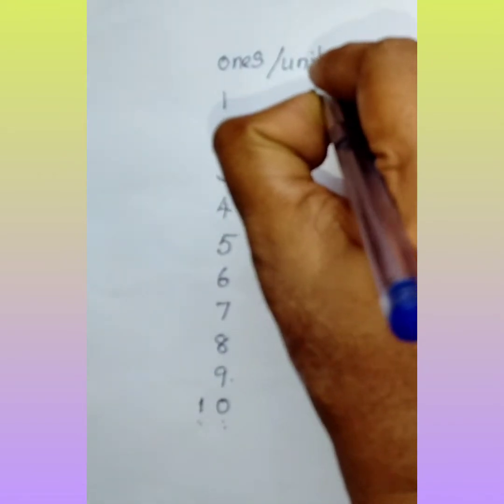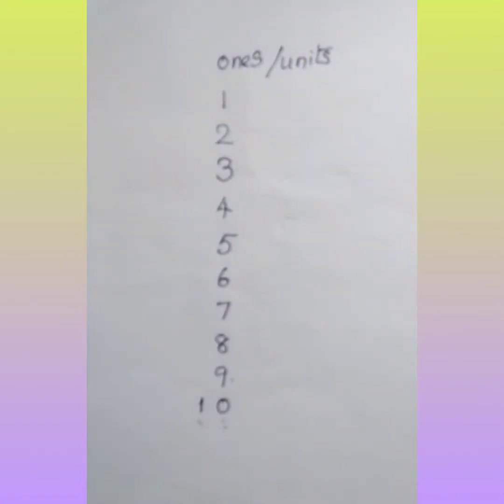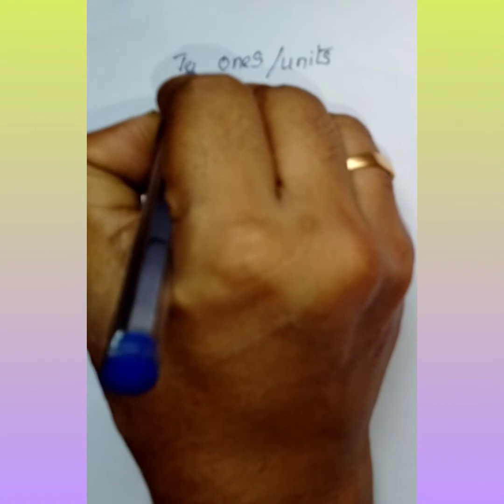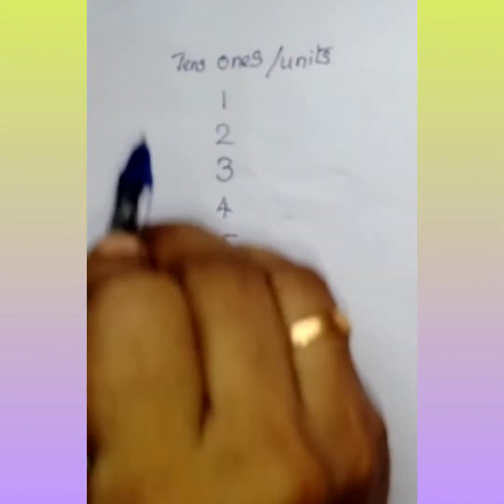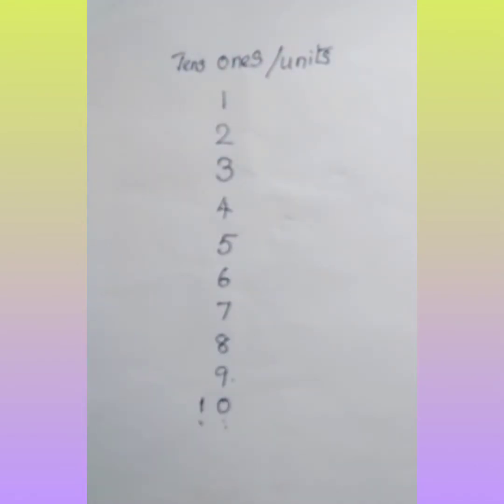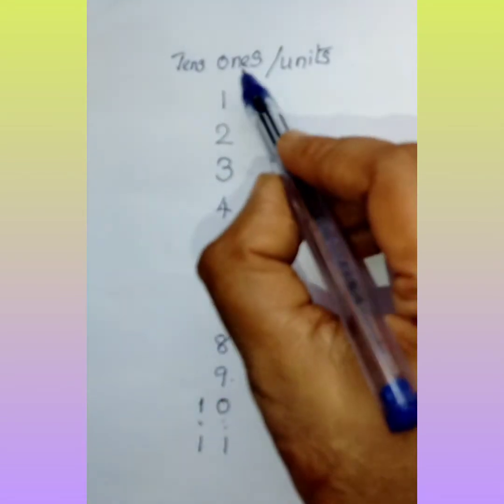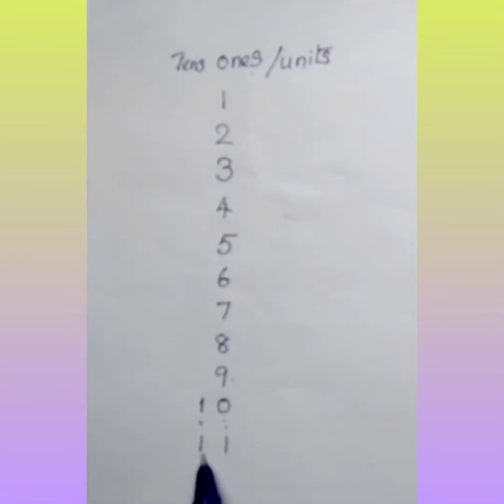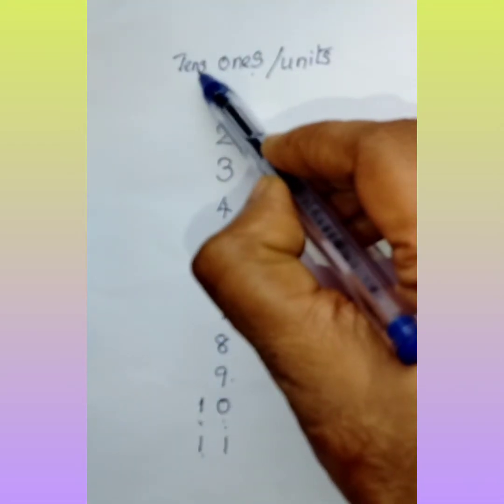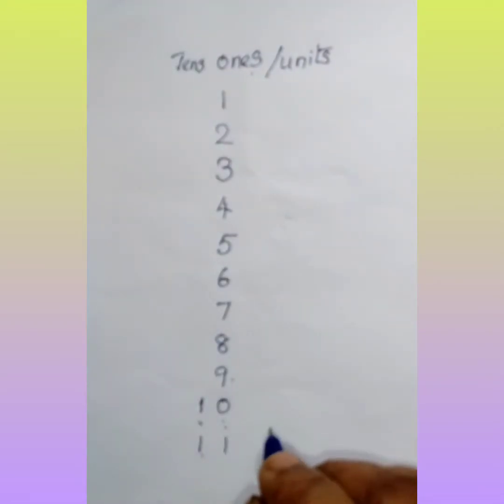And see 10. 10 has two digits. 1 is in tens place. Now what comes after 10? It is 11. That is 1 is in ones place and 1 is in tens place. How? 10 plus 1 is 11.